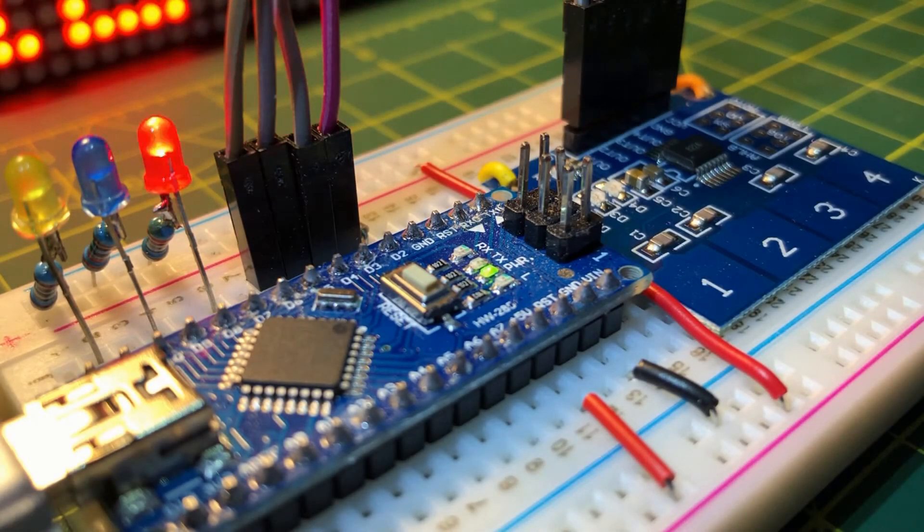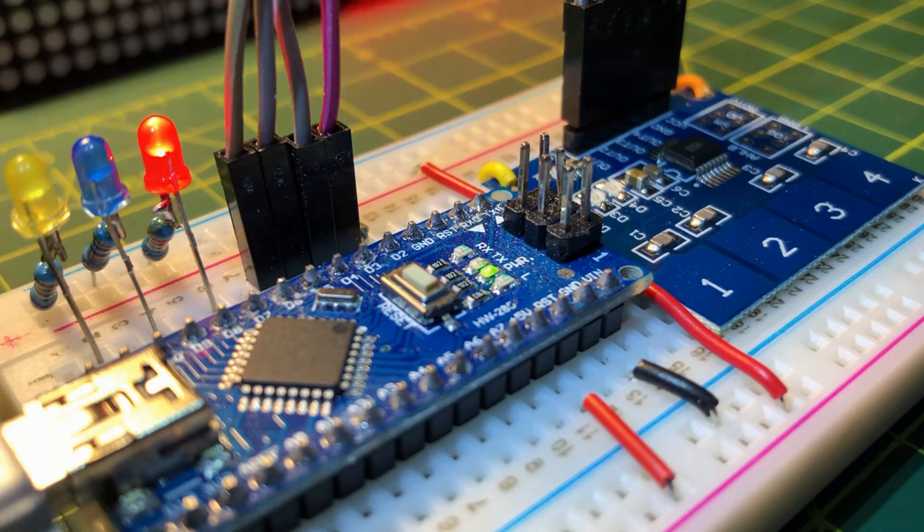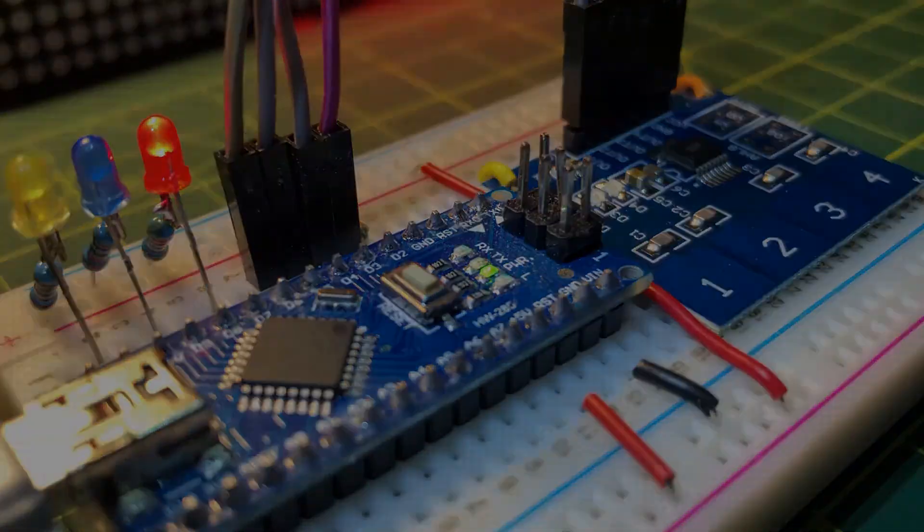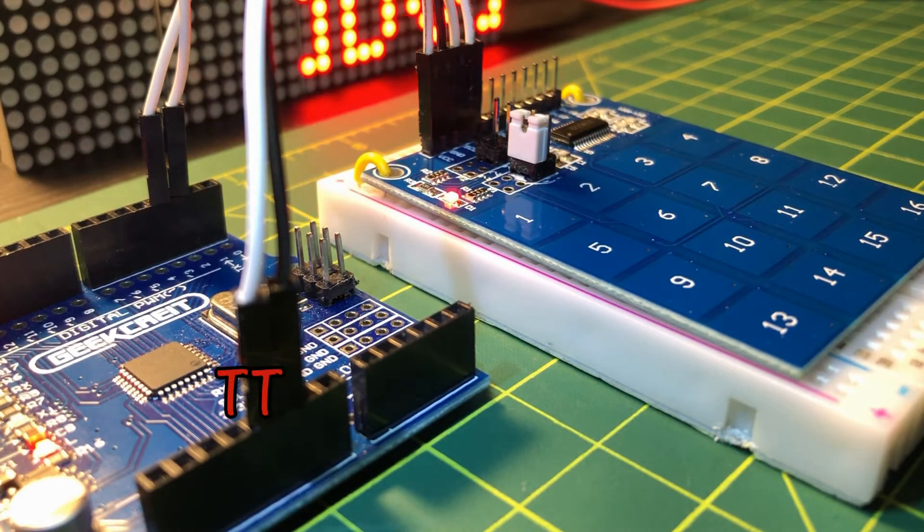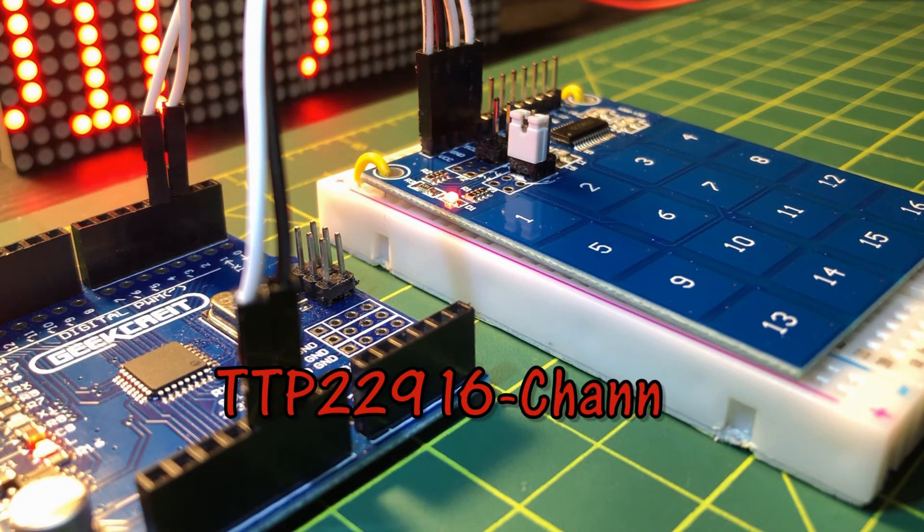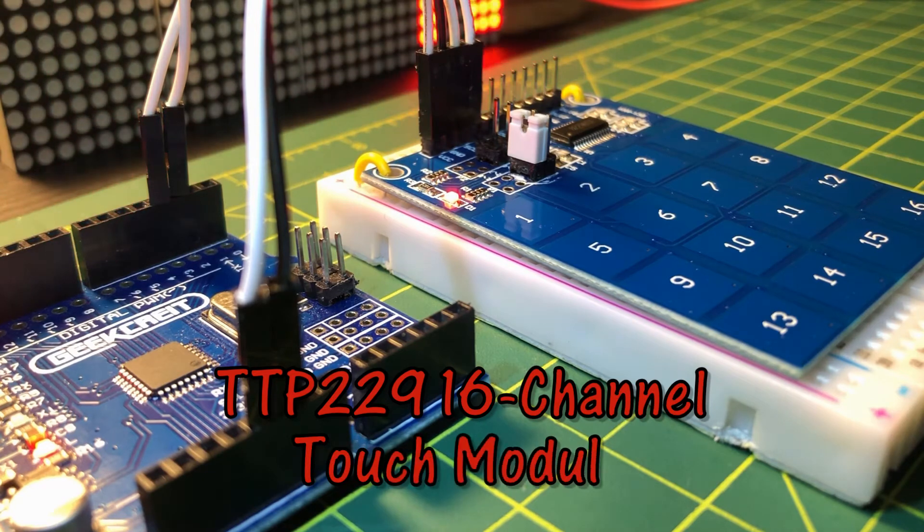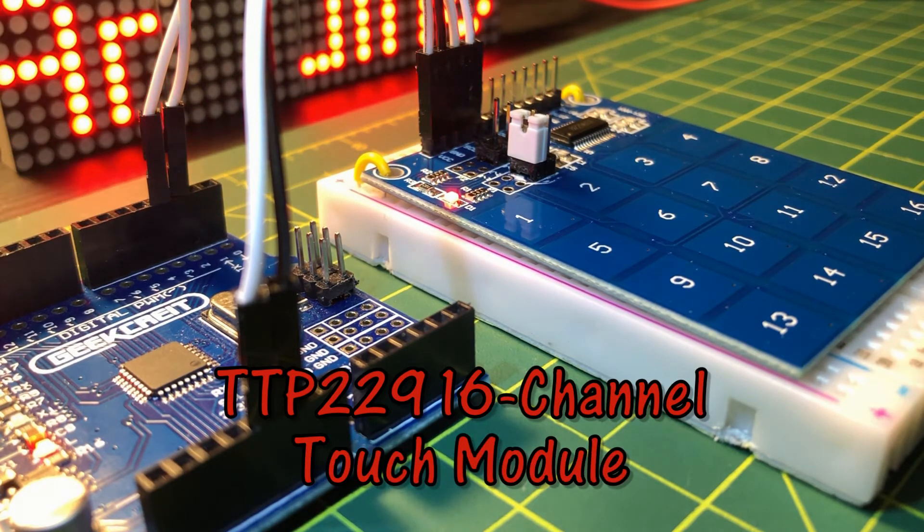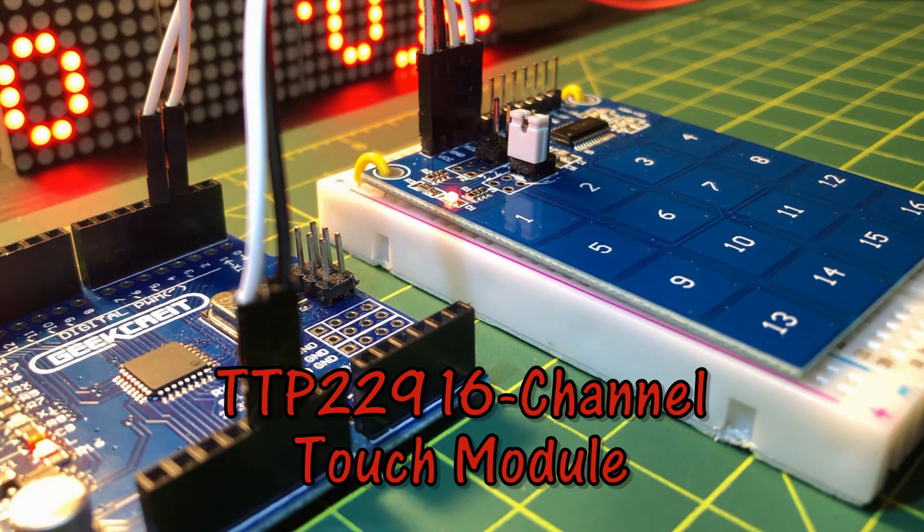In my previous video, I demonstrated the TTP224 module with 4 touch buttons. In this video, the TTP229 module is presented, which has 16 touch buttons and is serially interfaced with Arduino.